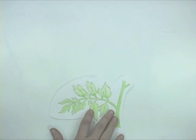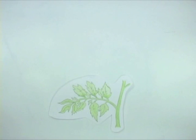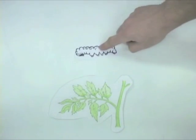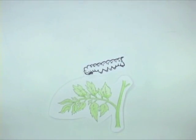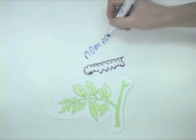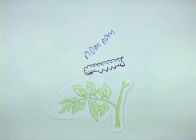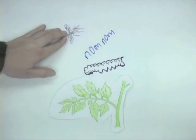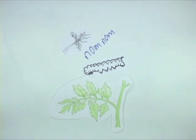The major players in tri-trophic interactions are plants, that are food producers; herbivores, that eat the plants; and natural enemies, which are predators and parasitoids that attack and kill the herbivores.